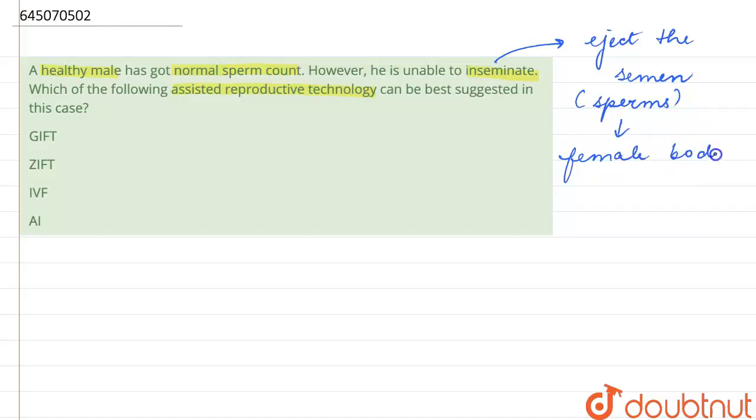He is unable to impregnate the female. All right, so these couple will require a type of assisted reproductive technology. Assisted reproductive technology is a way to help those couples who cannot conceive due to various reasons.